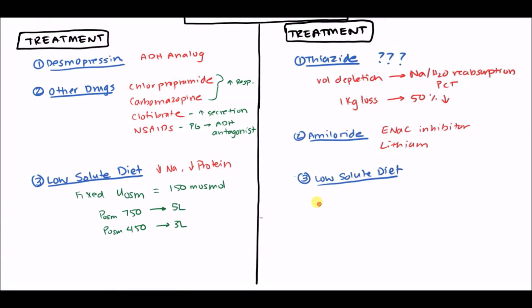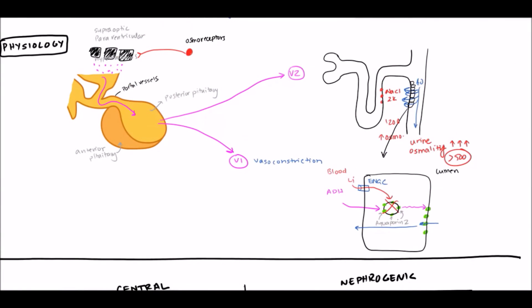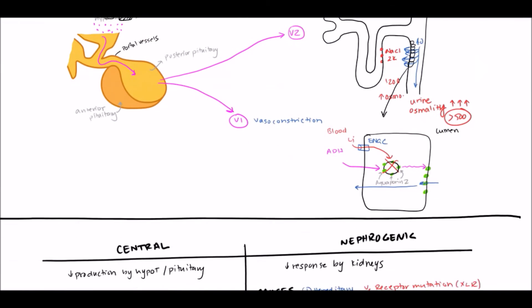An important point: you do not want to give loop diuretics. One might think that since thiazides help, a stronger loop diuretic should help even more — but no. Loop diuretics act on the sodium-chloride-potassium channel, which is required to maintain the osmotic gradient in the medullary area. If you don't maintain that osmotic gradient, less water is reabsorbed. By giving a loop diuretic, you're actually making the kidneys less responsive to ADH, which can make things worse, not better.